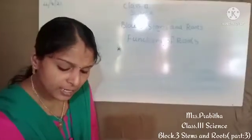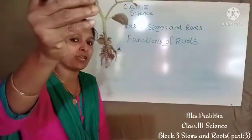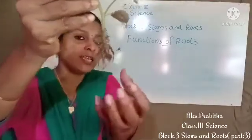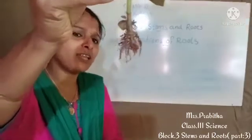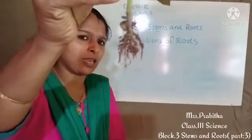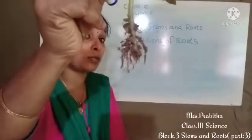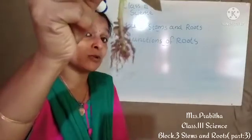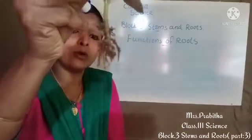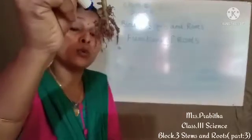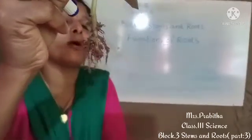I have one plant with me. You can see the roots of that plant. This is the root of this plant. On this root we can see soil. Why can we see soil on the root? Yes, it is because the roots are under the soil or under the ground. That is why we can see soil on it.